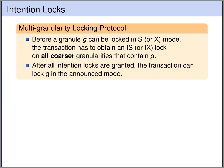The multi-granularity locking protocol works as follows. Before a transaction is allowed to lock a particular granule G in shared or exclusive mode, it first has to obtain intention shared or intention exclusive locks respectively on all the coarser levels of granularity that contain granule G. Only when all of those intention locks have been granted is the transaction allowed to obtain the lock on granule G in the announced mode.